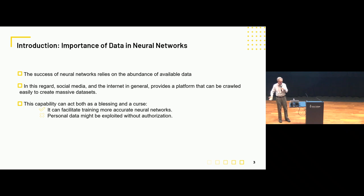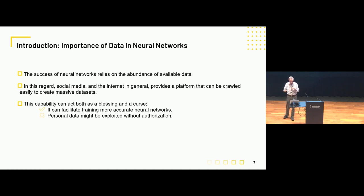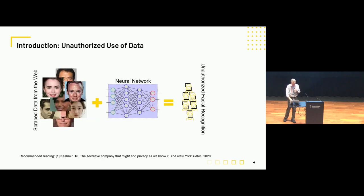Neural networks need lots of data. When training a model with images, companies go out and scrape the internet, soaking up a whole lot of images to create a huge dataset for training. This helps build more accurate neural network models, but if your personal data has been hoovered up by the company doing the machine learning and you don't want it to be in there, what can you do to stop that?